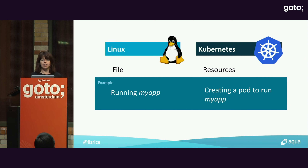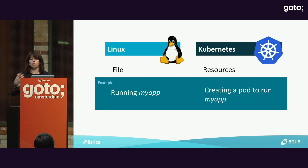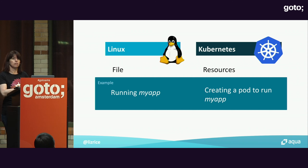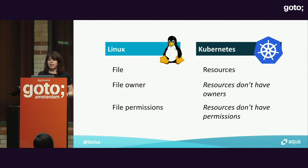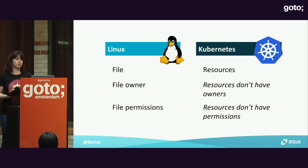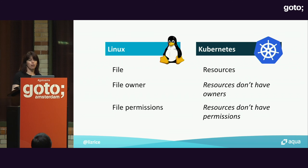To take a more concrete example: in Linux, if you want to run an application called MyApp, you run a file called MyApp. In Kubernetes, you'd have to create a pod — a type of resource — in order to run that application. But in Kubernetes, resources don't have owners and they don't have permissions information associated with them. We have to go to different objects and different abstractions to find the equivalent of owner and permissions bits.